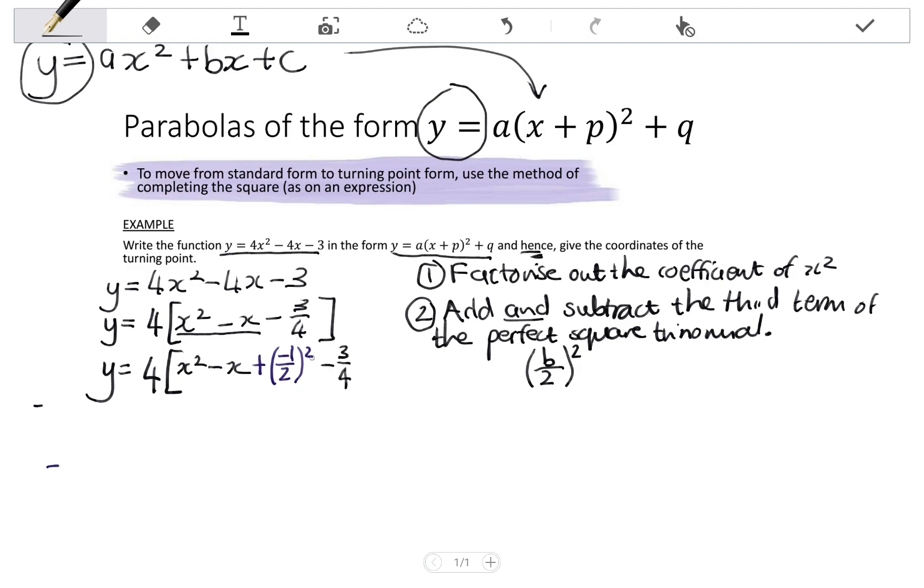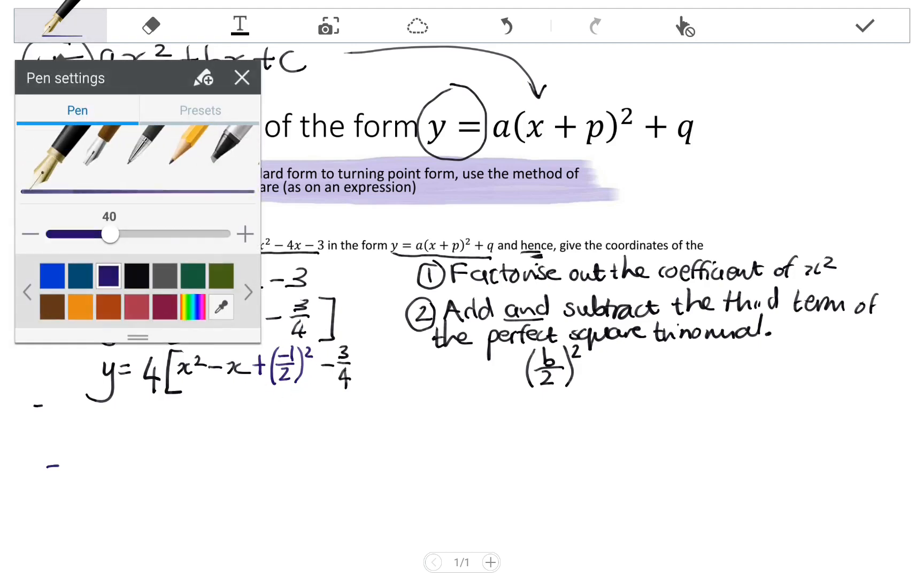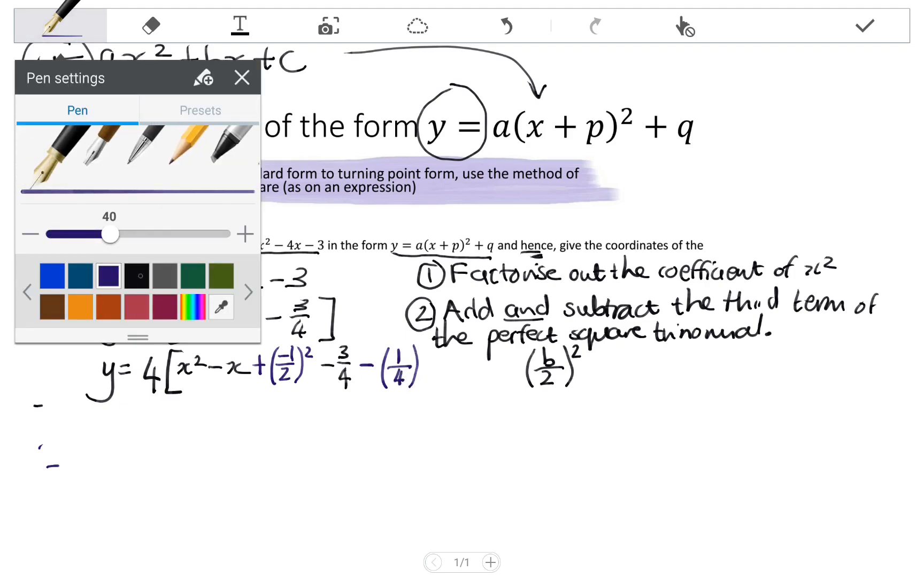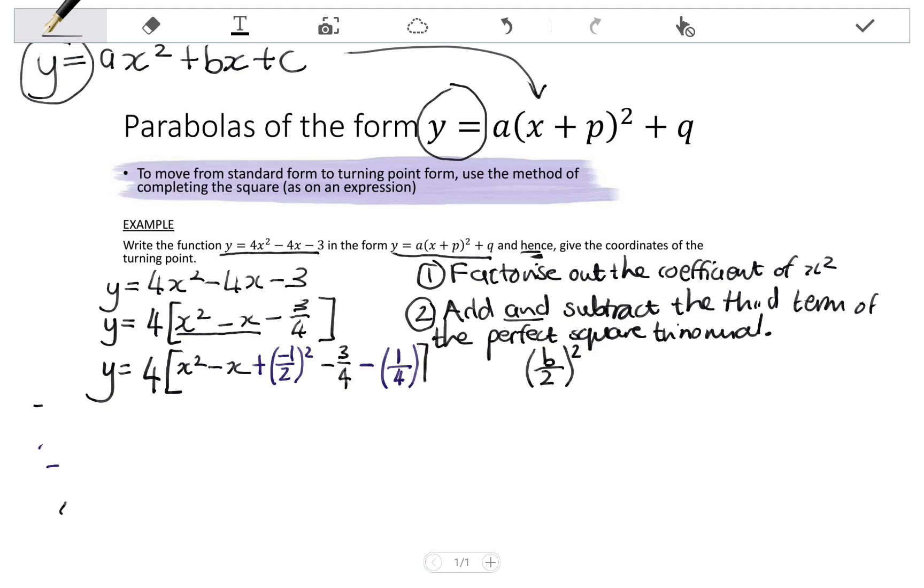So then I have my negative 3 over 4 from the previous line. But since I've added in a value, I need to also subtract that value. So I'm going to be subtracting the third term. Now the third term simplified is negative 1 over 2 squared, means I square the negative 1, which gives me positive 1. I square the 2, which is 4. And then close your square brackets.